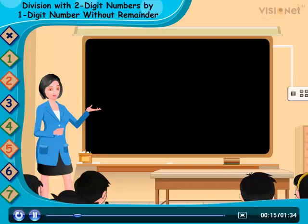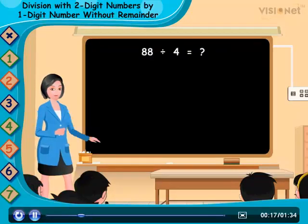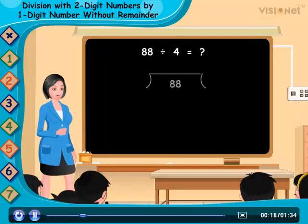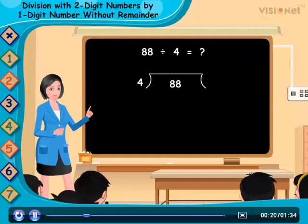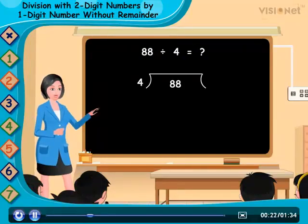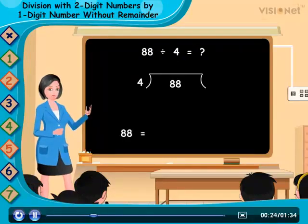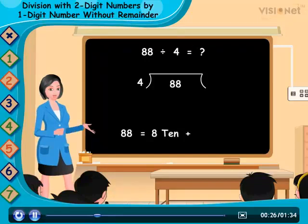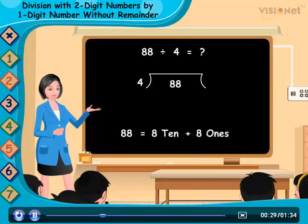Let us divide 88 by 4. First we place 88 and 4 like this. As we know that 88 can be written as 8 tens and 8 ones. So we start dividing from the tens place.